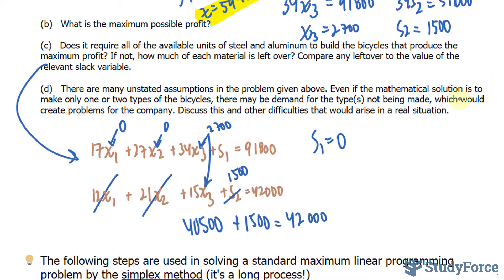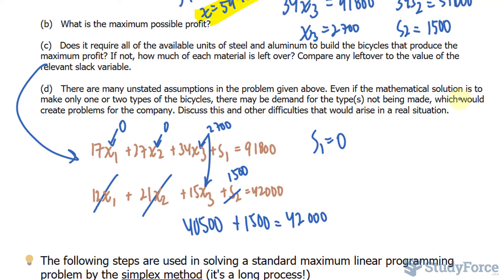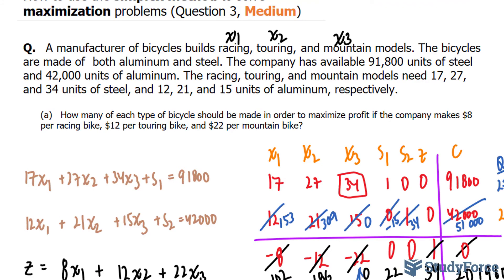Finally, in question D, there are many unstated assumptions in the problem given above. Even if the mathematical solution is to make only one or two types of bicycles, there may be demand for the types not being made, which would create problems for the company. Discuss this and other difficulties that would arise in a real situation. Of course, this happens all the time with companies. For example, if a company is creating a supercar, take for example, Toyota, they're probably going to lose a lot of money creating that car because of design and development, but it's still made just for publicity, for example. So yes, the company might be losing money on certain things that they create, but it makes the company popular in the long haul because it gives people something to talk about. So that's something that a company such as this size would consider. There you have it. That is how to use the simplex method to solve maximization problems.